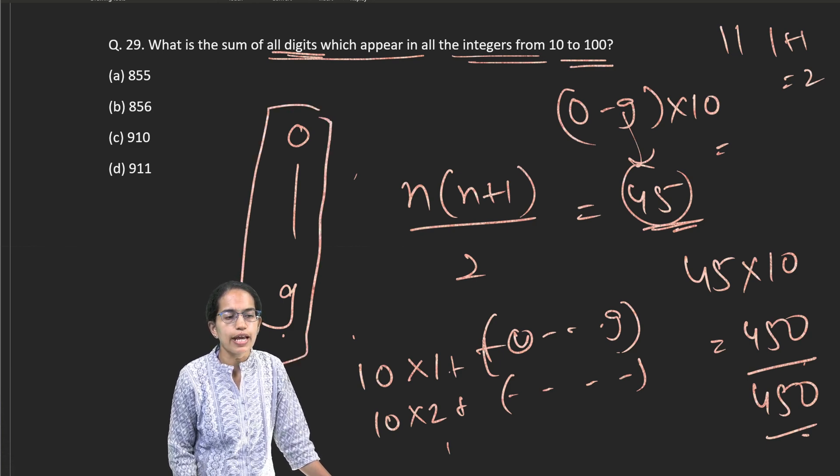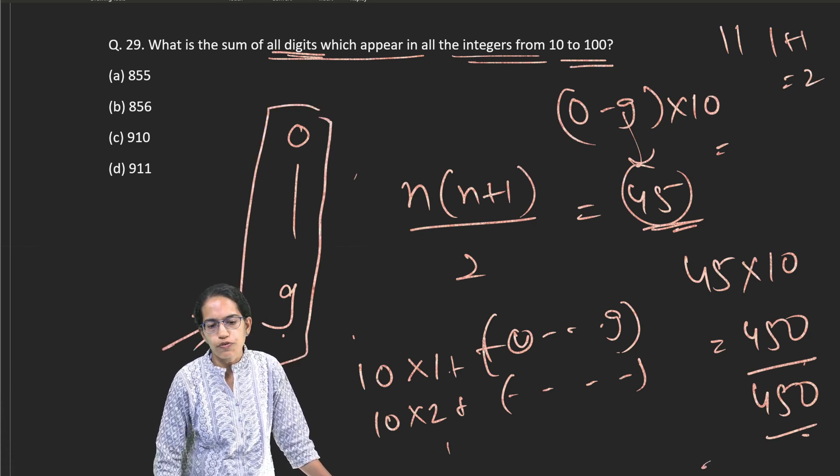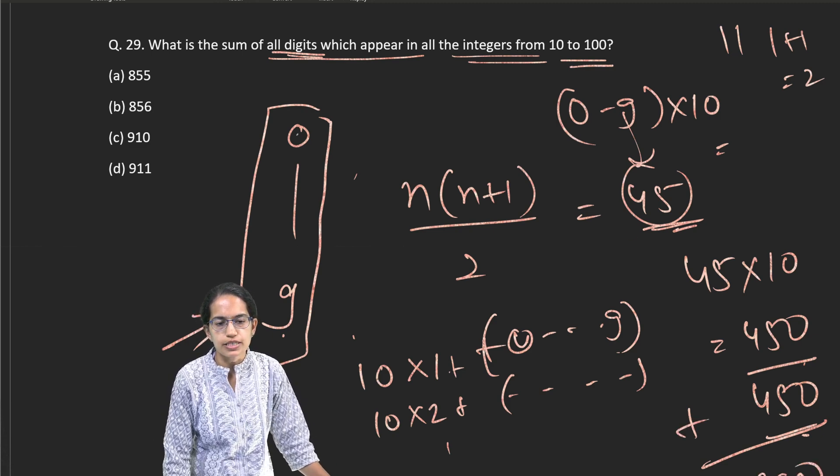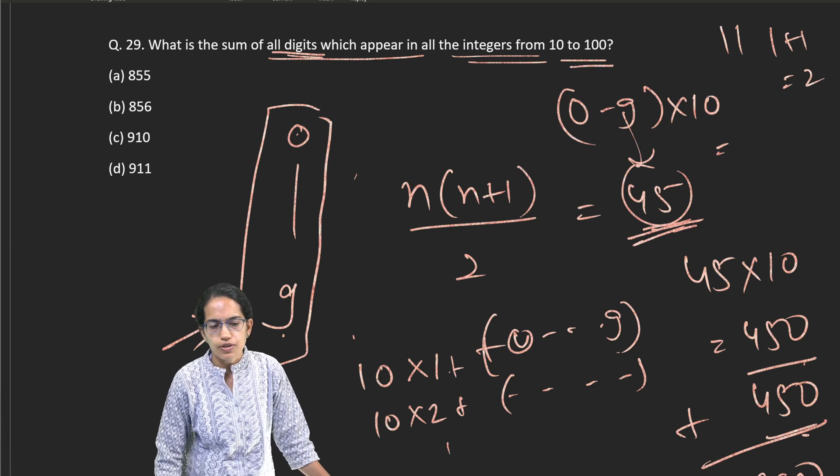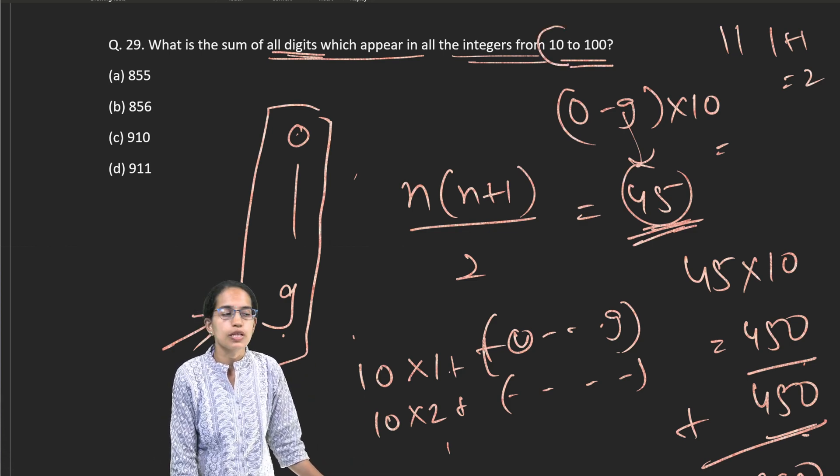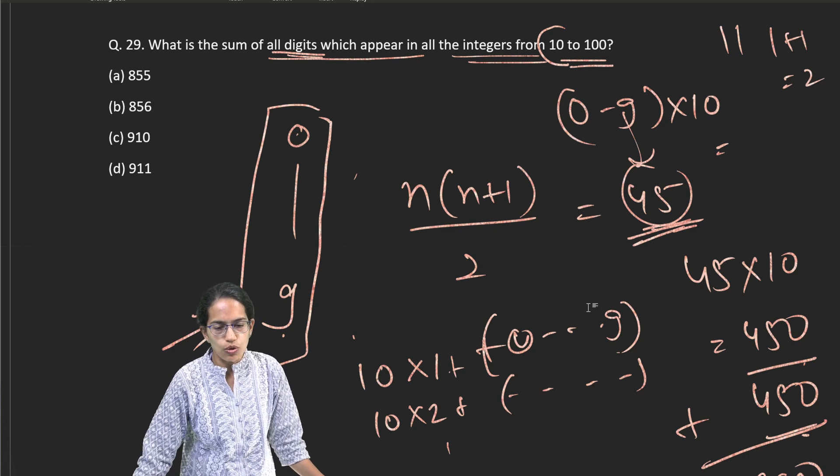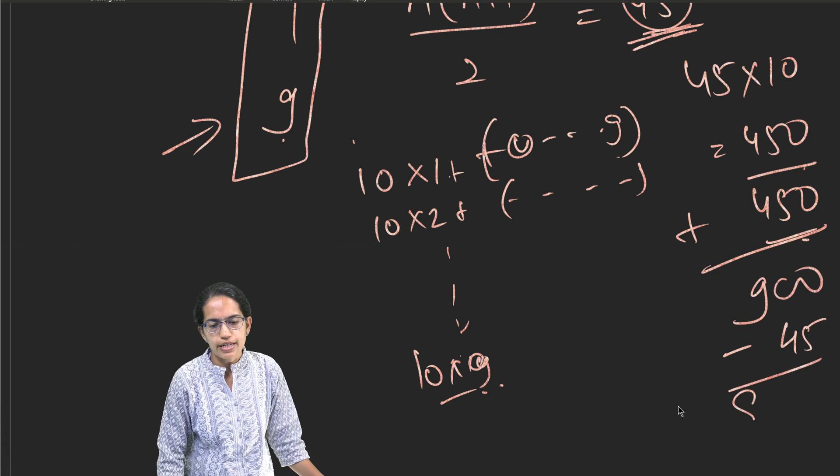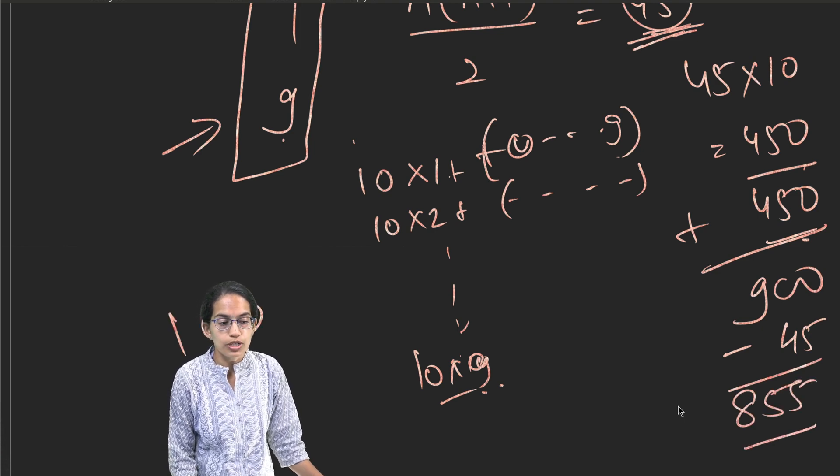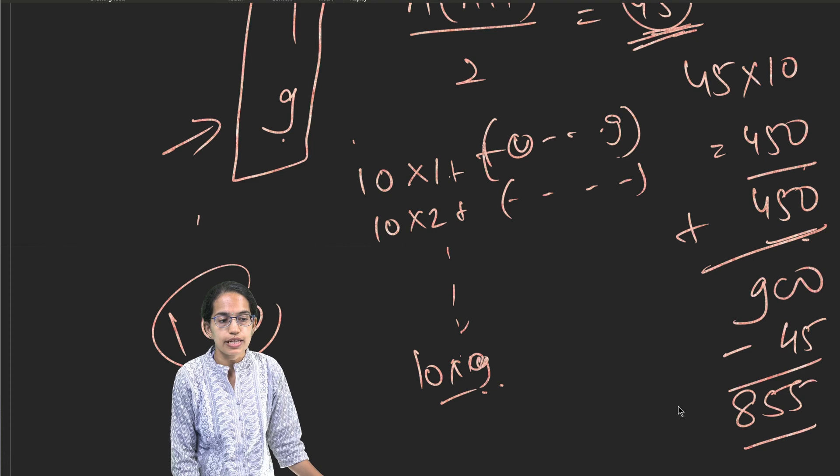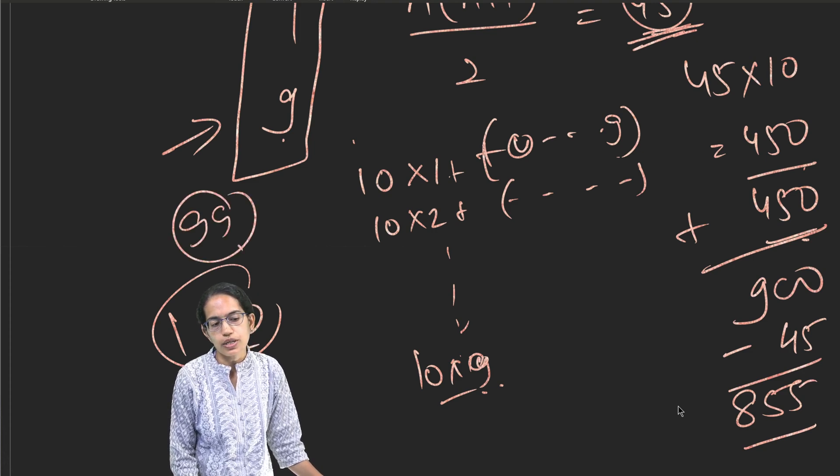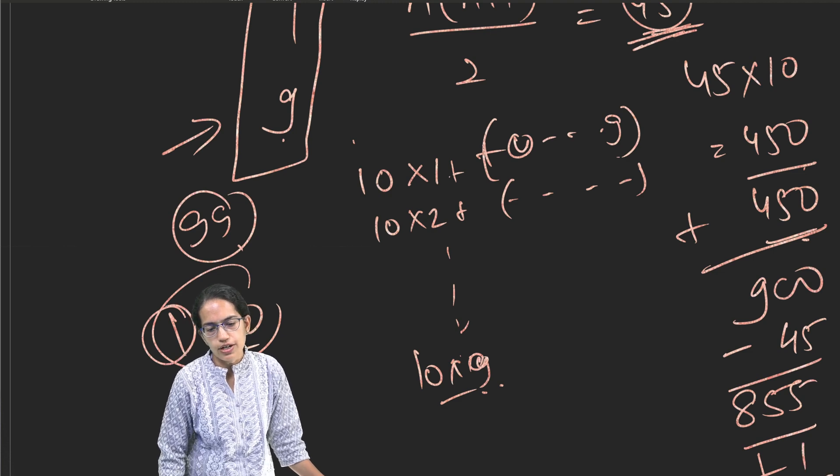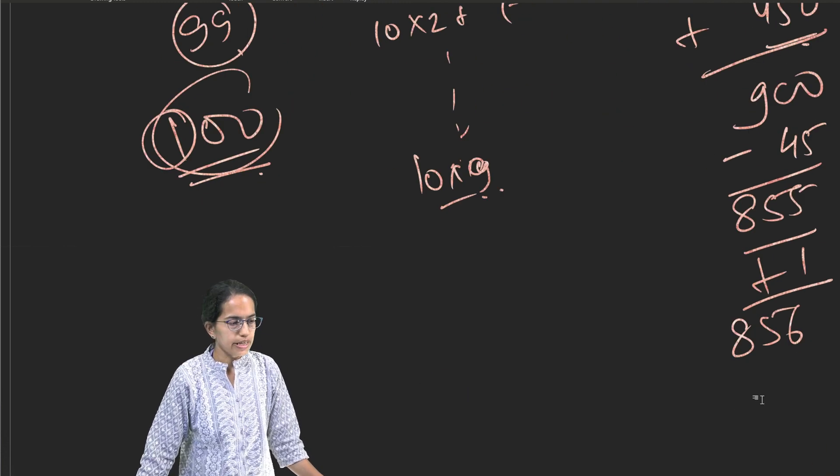But note, here 0 to 9 is removed. So 450 plus 450 is how much? 900. From this 900, I remove the first set which is 45 because 0 to 9 is now not counted. I am counting only from 10 in the question. So what I do is I remove from 900, 45. So I get 855. But I have to count till 100. I was so far counting till 99 only. So when I am counting till 100, I would have to add this 1 to it.